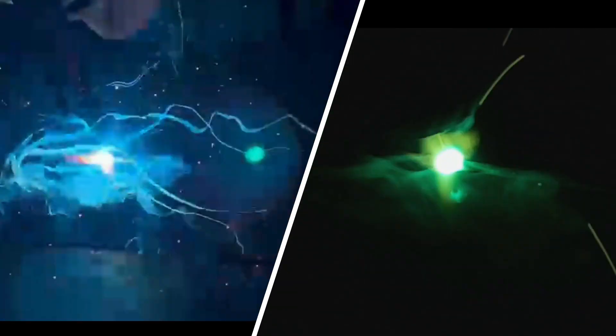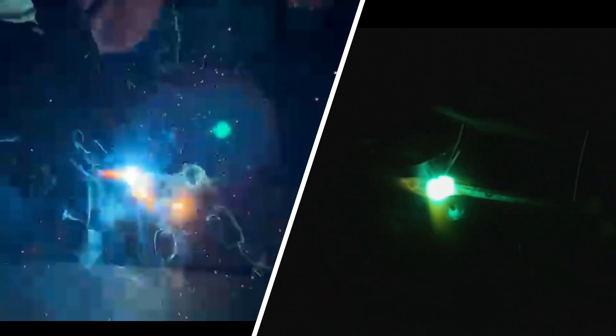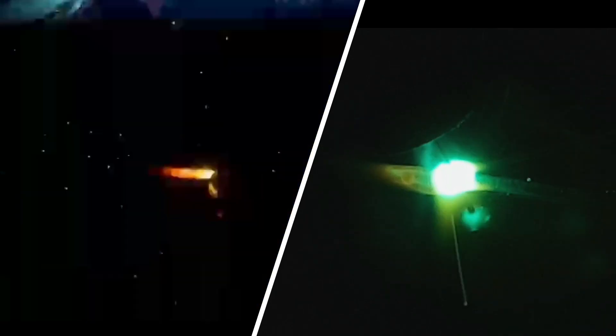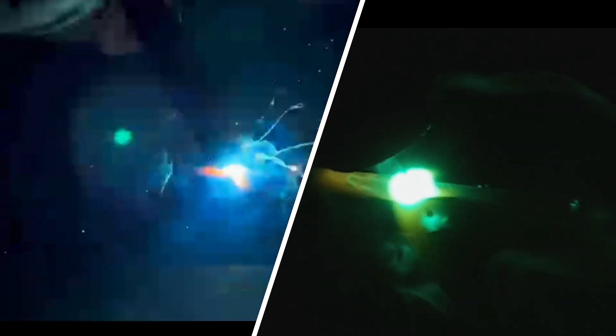In this video we're going to MIG weld two common steel thicknesses which is 3 and 6mm. We're going to be going through the settings, techniques and tips you'll need to get a clean strong weld without blowing through the thin stuff or under penetrating the thick.